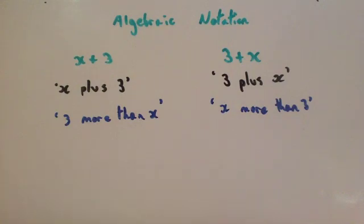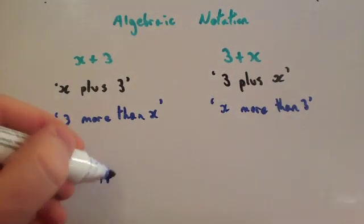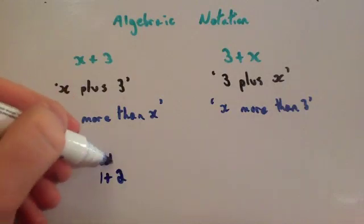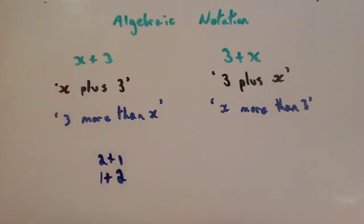Both of these expressions would give you the same answer. Because if you do x plus 3 or 3 plus x, they give you the same thing. In adding, it doesn't matter what order you add things in. For instance, if you do 1 plus 2, it's 3. Or if you do 2 plus 1, it's also 3.